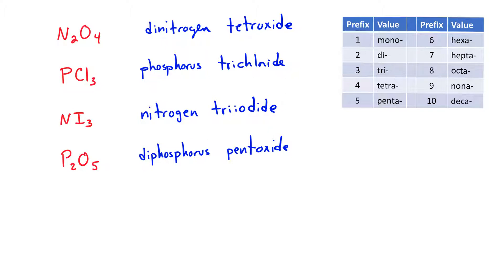The question is: how do you know when to drop the double vowels, as in tetroxide or pentoxide, versus when it's okay to keep them, as in triiodide? The answer is that if it's an oxide, you delete the double vowels. If it's an iodide, it's okay to keep them.